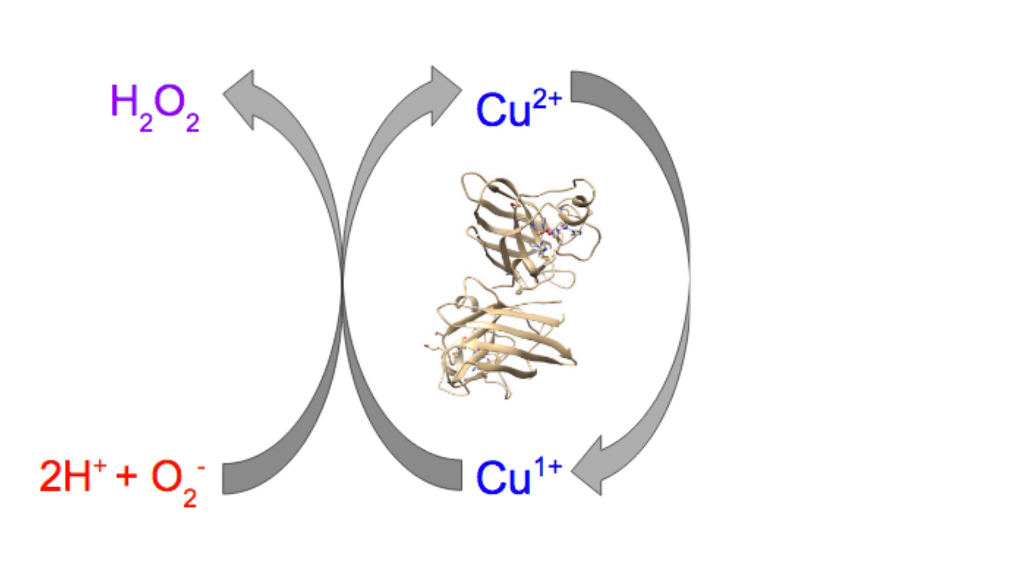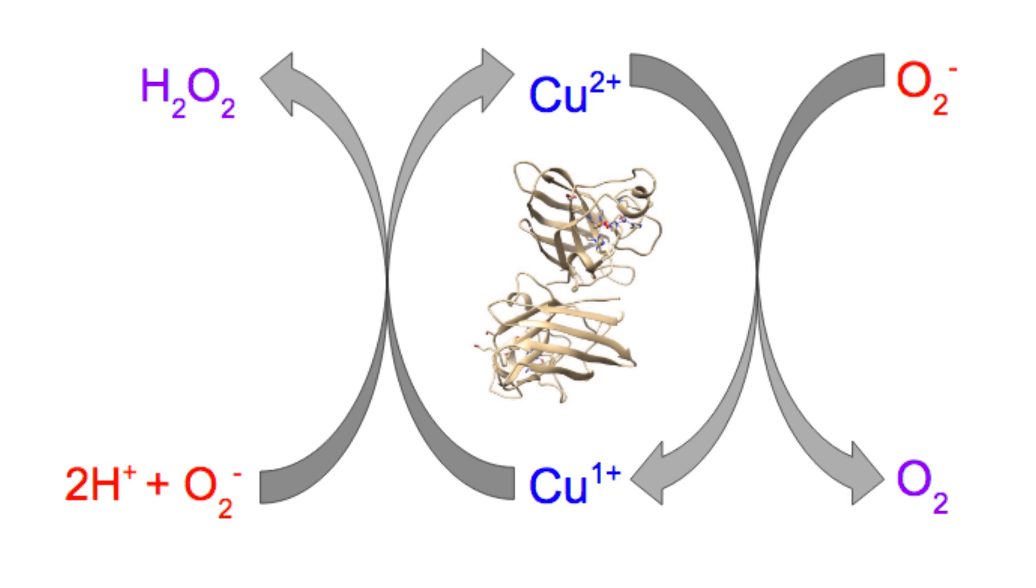However there is no direct coordination of copper 1 to superoxide and therefore this redox reaction occurs outer sphere. The cycle then continues with these two steps in order to convert superoxide into the less toxic substances, dioxygen and hydrogen peroxide.